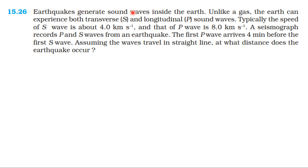Earthquakes generate sound waves inside the earth. Unlike a gas, the earth can experience both transverse S and longitudinal P sound waves. Typically, the speed of S wave is about 4 km per second and the speed of P wave is 8 km per second. A seismograph records P and S waves from the earthquake. The first P wave arrives 4 minutes before the first S wave. Assuming the waves travel in a straight line, at what distance does the earthquake occur?